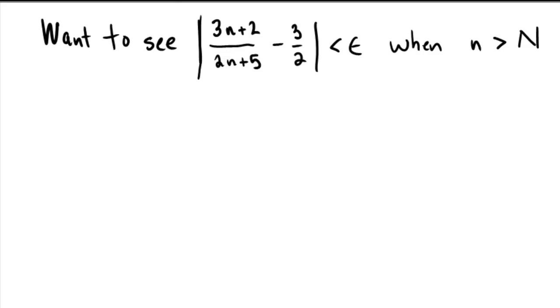So first of all, if we do just the combining of the fractions by getting a common denominator, you'll find that after simplification this boils down to become, I did this on scratch paper independently, we get negative 11 over 2 times 2n plus 5.